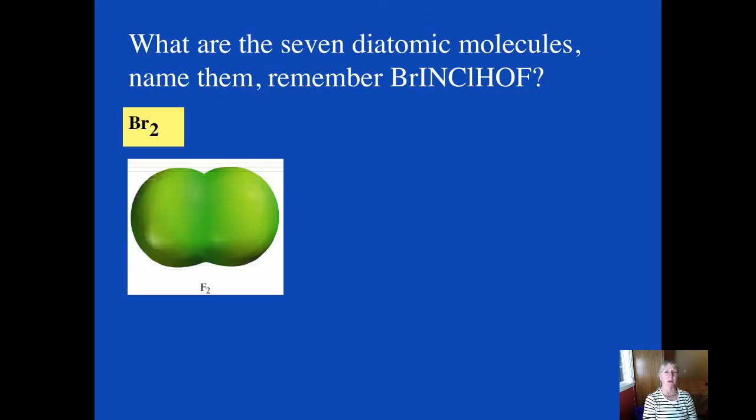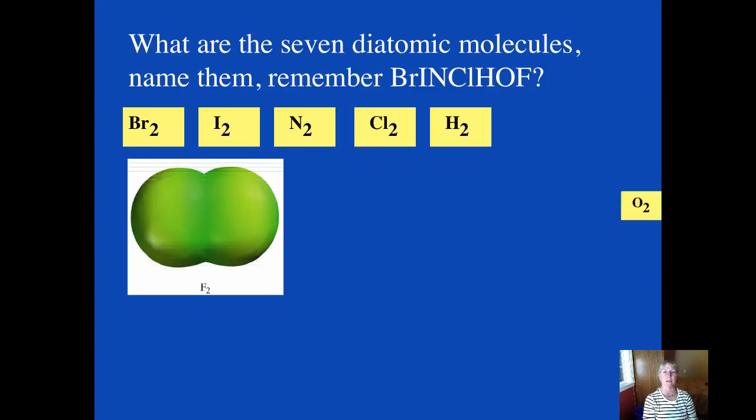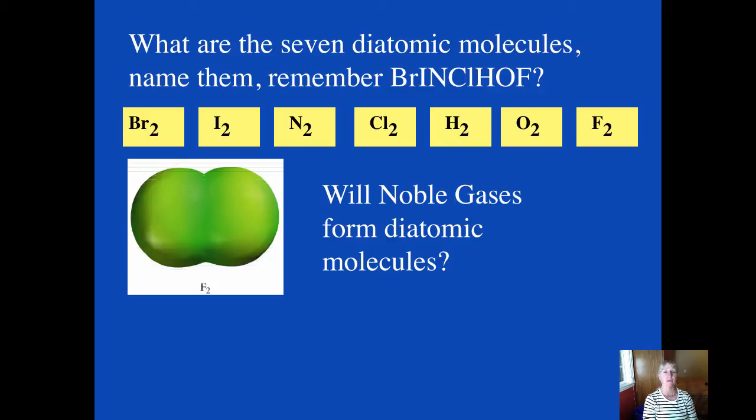Let's take a look at those diatomic molecules again. Remember these are the BrINCIHOF. I suppose astatine is also diatomic or two-atomed molecule, but because it's radioactive it's often not mentioned. All of these elements that exist as diatomic molecules are nonpolar. They don't have any parts on them where there are slight charges because they share their electrons evenly between them. Do noble gases form diatomic molecules? I think you know the answer to that. Absolutely not. They're already stable and do not need to bond to any other atom to get a stable octet.